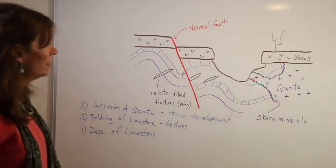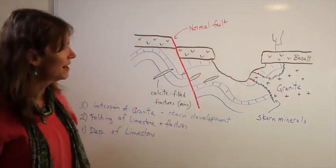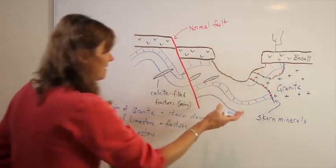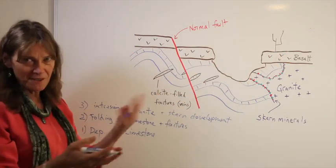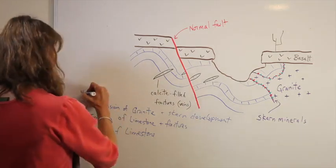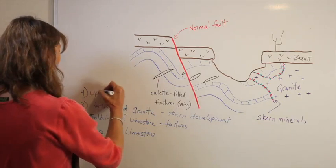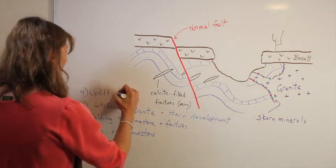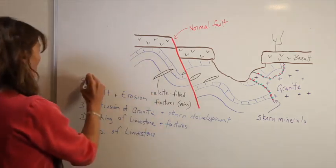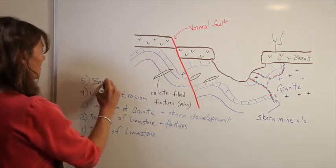Okay. Well, we've got the basalt over the granite. So there had to have been a period of uplift and erosion, right? To bring the granite and the folded limestone up to the surface so the basalt could flow over it. So we have a period of uplift plus erosion. And then we have five basalt flow, basalt eruption.